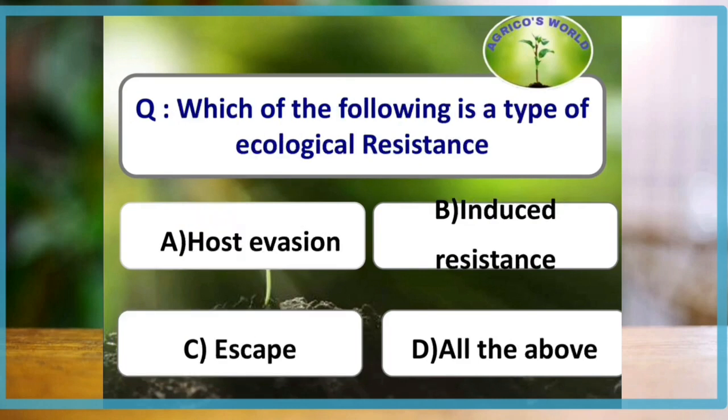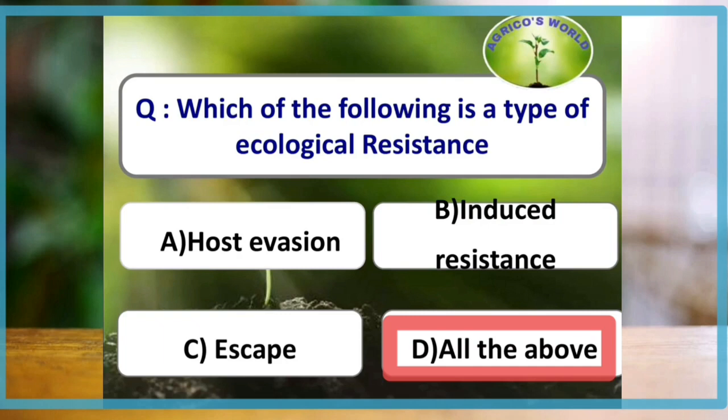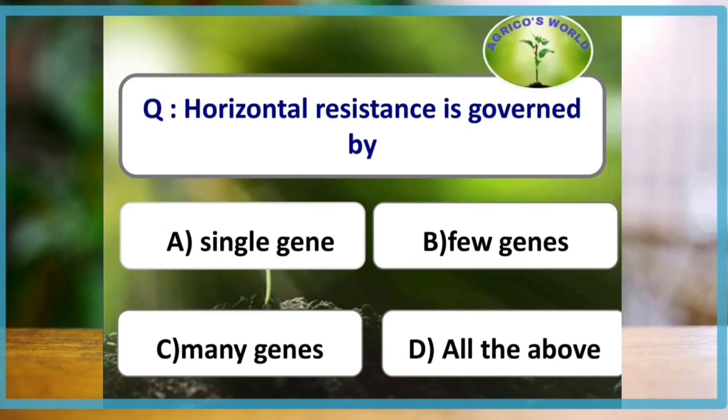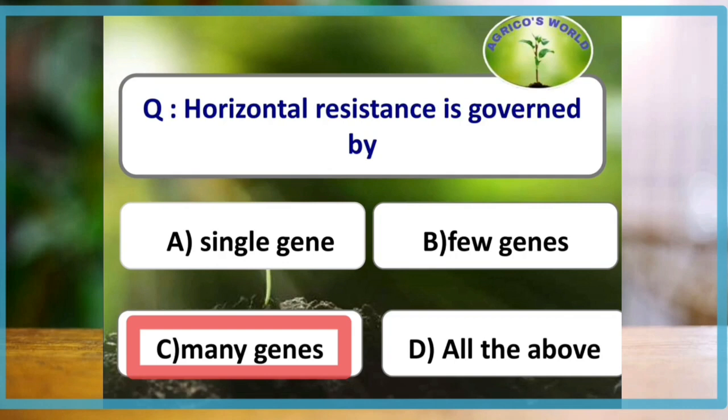Host evasion, induced resistance, and escape — all three are types of ecological resistance. Horizontal resistance is governed by many genes, whereas vertical resistance is governed by only a few genes.